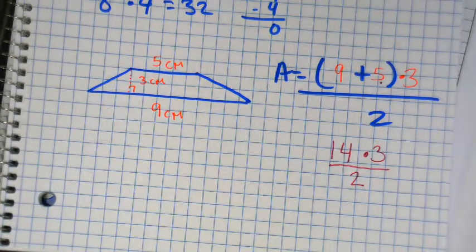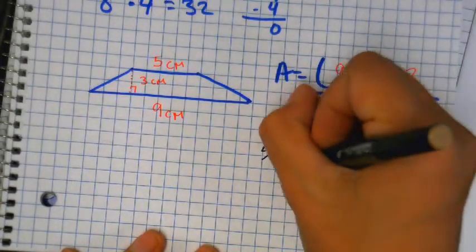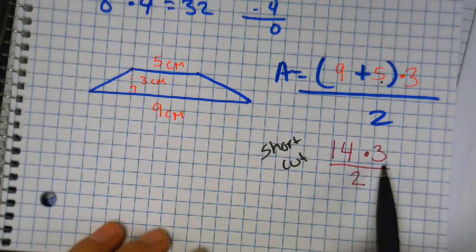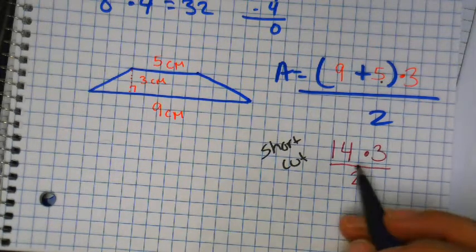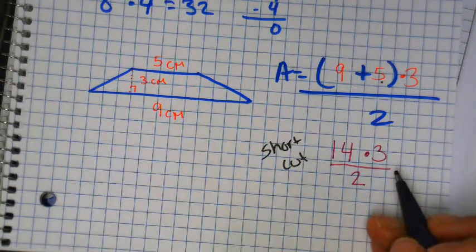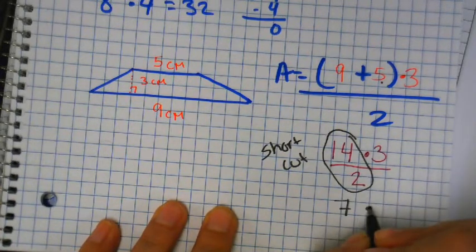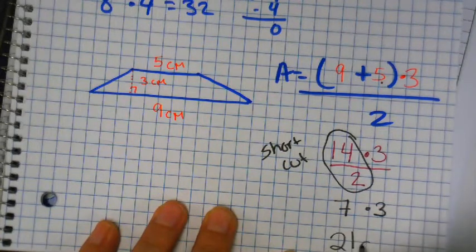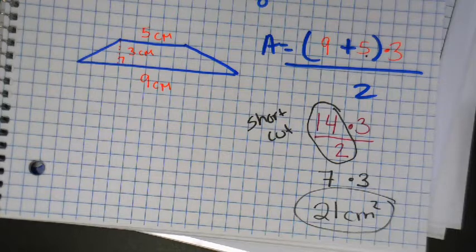You could look at your multiplication table and do 14 times 3, or you could do the shortcut — divide 14 by 2. Let's practice the shortcut. Take one of these numbers and divide it by 2. Do I want to take 3 and divide it by 2? No — you'd get a decimal, and we're trying to make this easier, not harder. So divide 14 by 2 — that's 7. Seven times 3 is 21. Our answer is 21 centimeters squared. The shortcut also helps you make fewer mistakes.